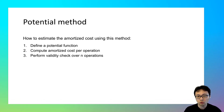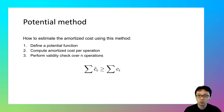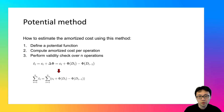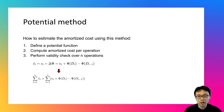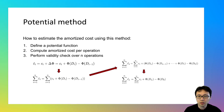The third step is to perform the validity check over N operations. The goal is to verify that the total amortized cost can serve as an upper bound of the total actual cost. You use the relationship between amortized and actual cost per operation, summing over N operations on both sides of the equation, then simplify using the recursive nature of this relationship.